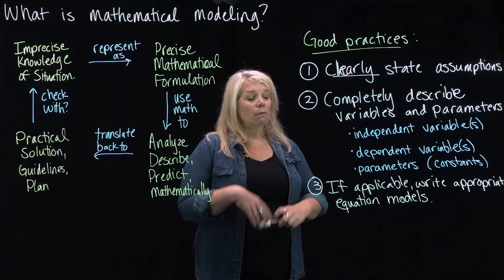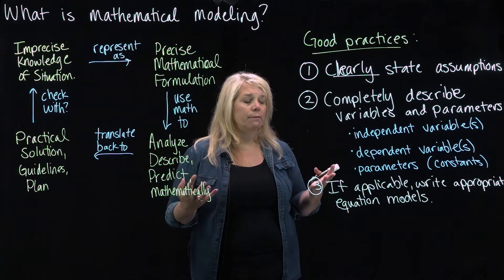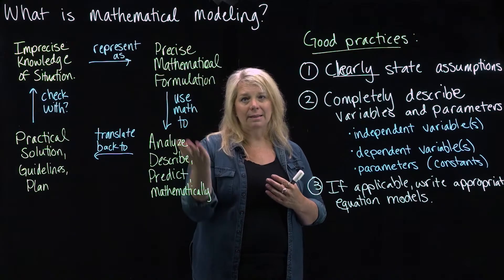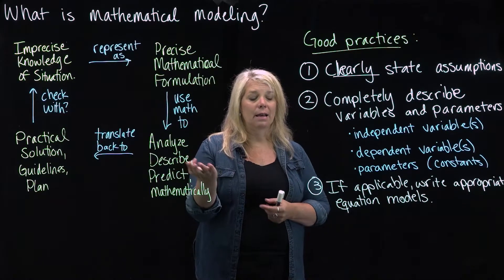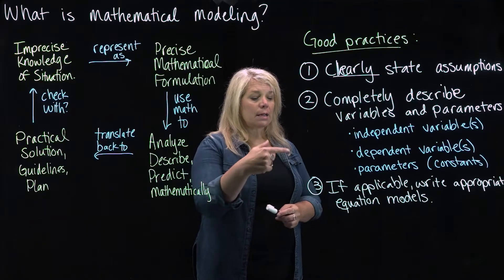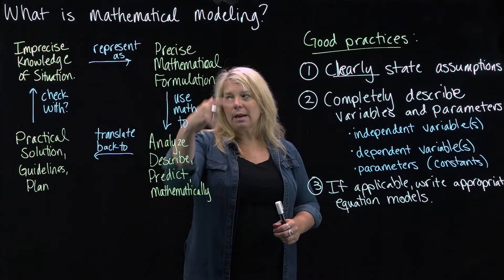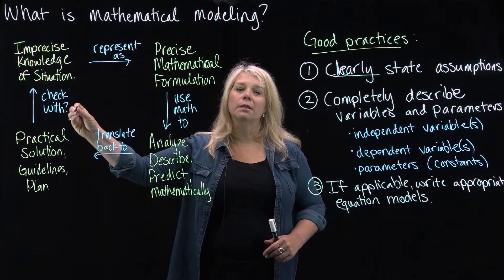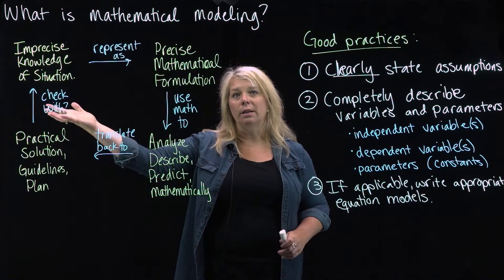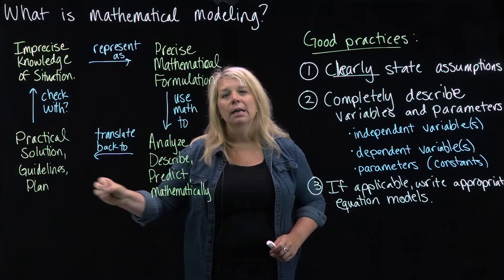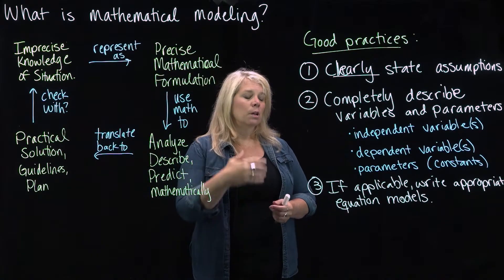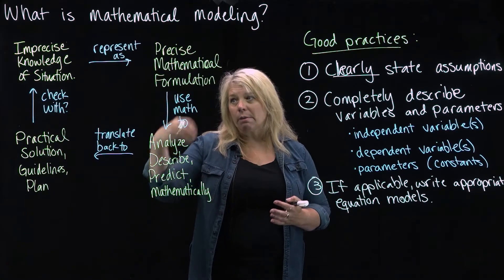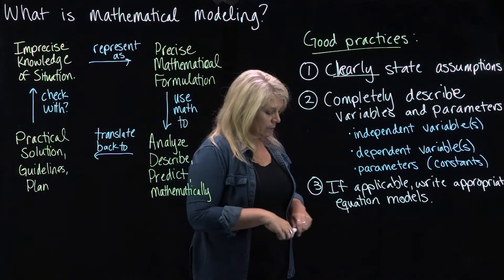So you can write an equation that takes into account all sorts of different variables and parameters, but then it can be very difficult to analyze that, to actually do the math to analyze that. So you want to use as simple of an equation as possible that actually gives good results. That when you check that back with your knowledge of the situation and maybe further knowledge that you've gained since then of the situation, it seems to be giving reliable results. So you want to use as simple of an equation model as possible, but you still want to make sure that you're getting reasonable results from that.